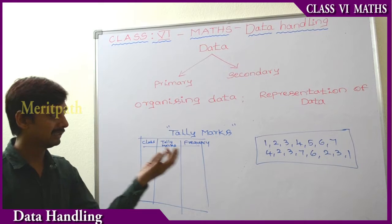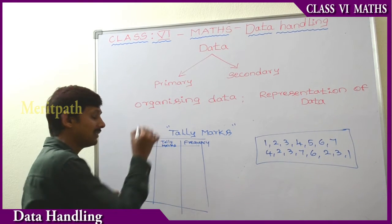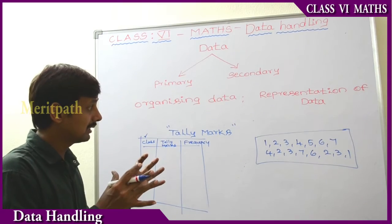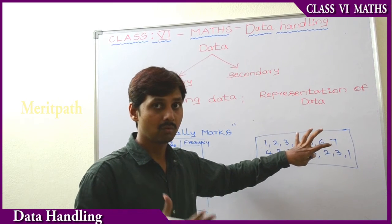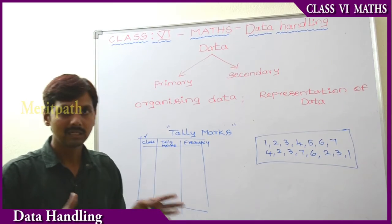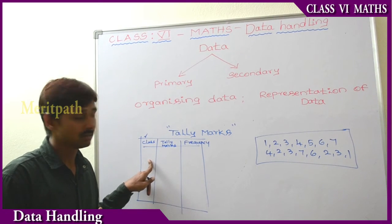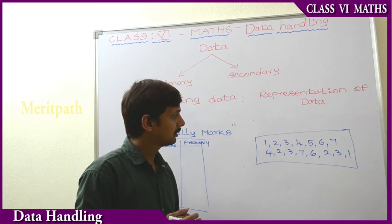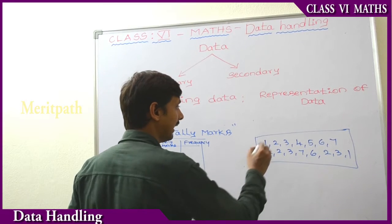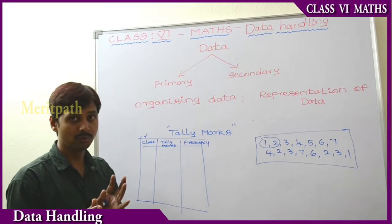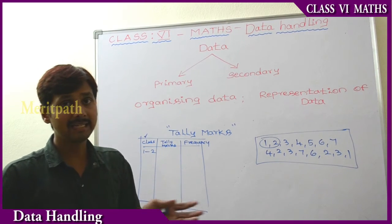After gathering some numbers and information, let's discuss about the class. Class is nothing but — we need to take observations. Observations are the values, whatever information we have collected. Let's make it into some groups, and that group is called a class. To understand easily, we'll take some values into one group — like 1 and 2. From 1 to 2, including both, we take as one group.